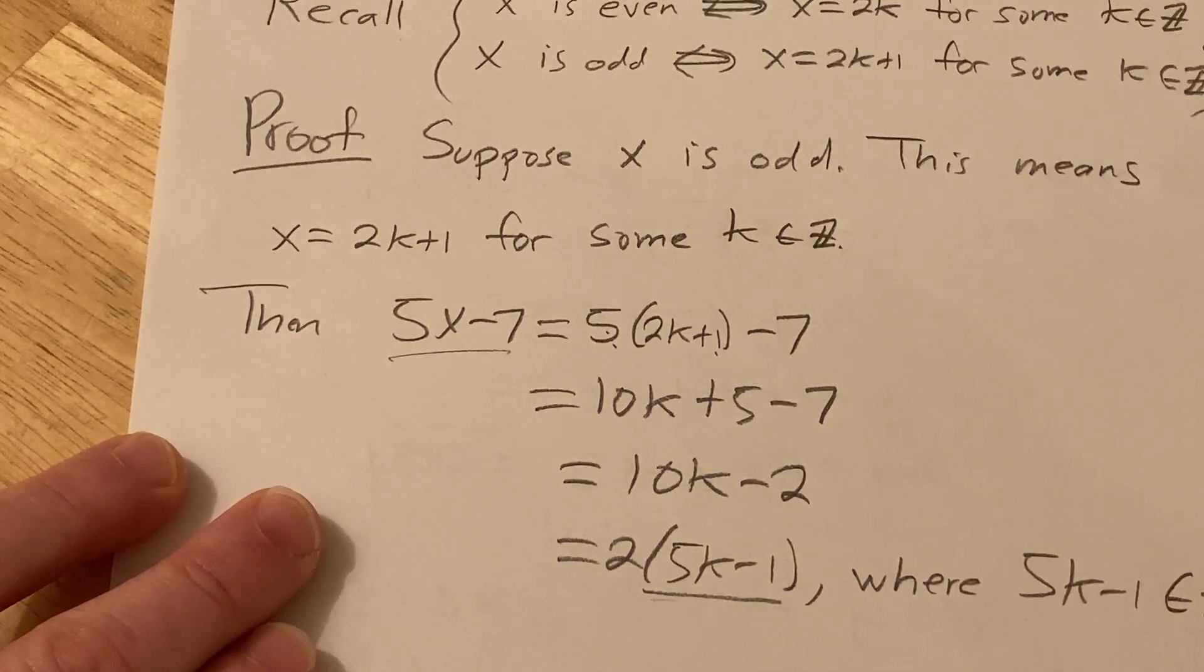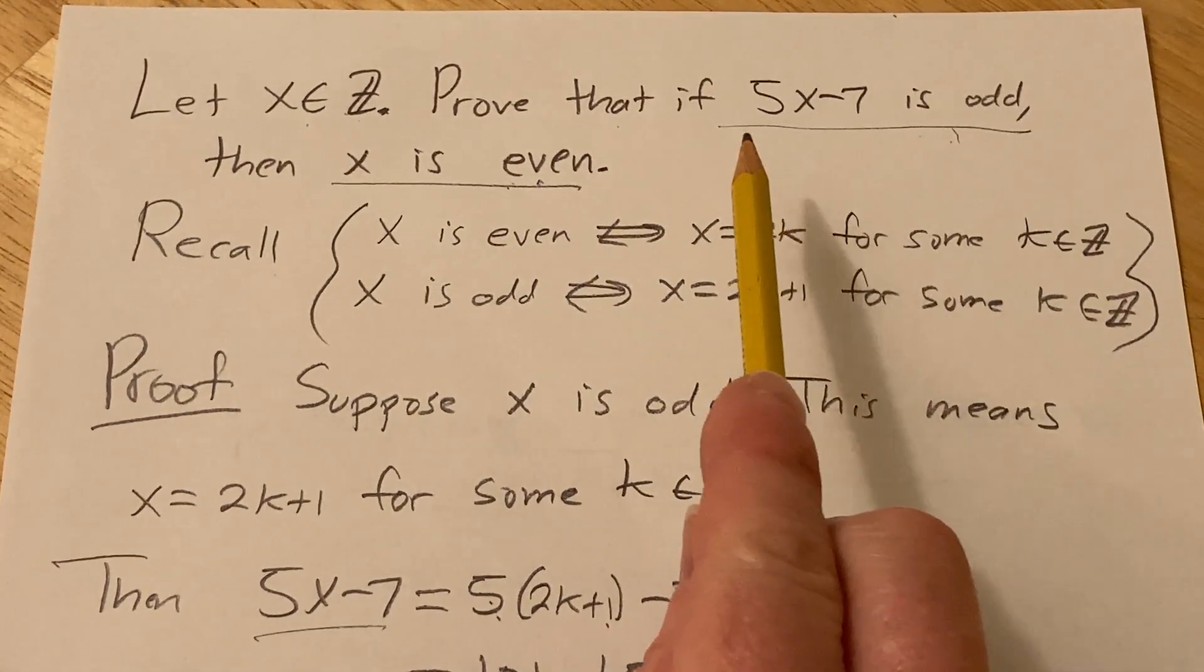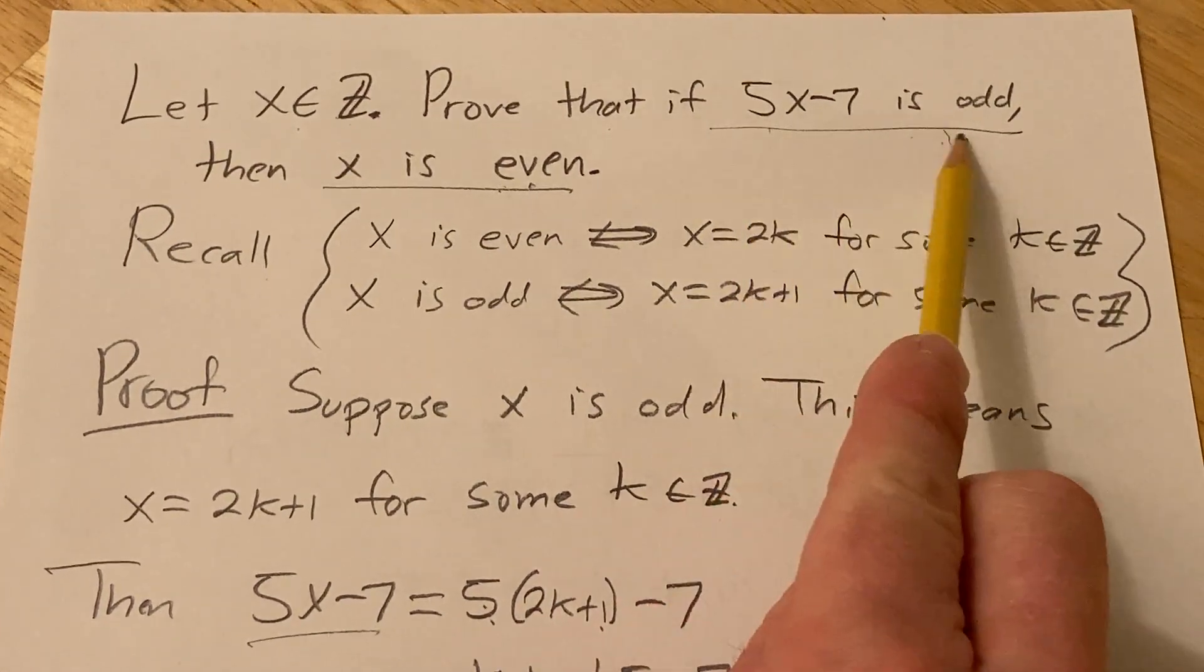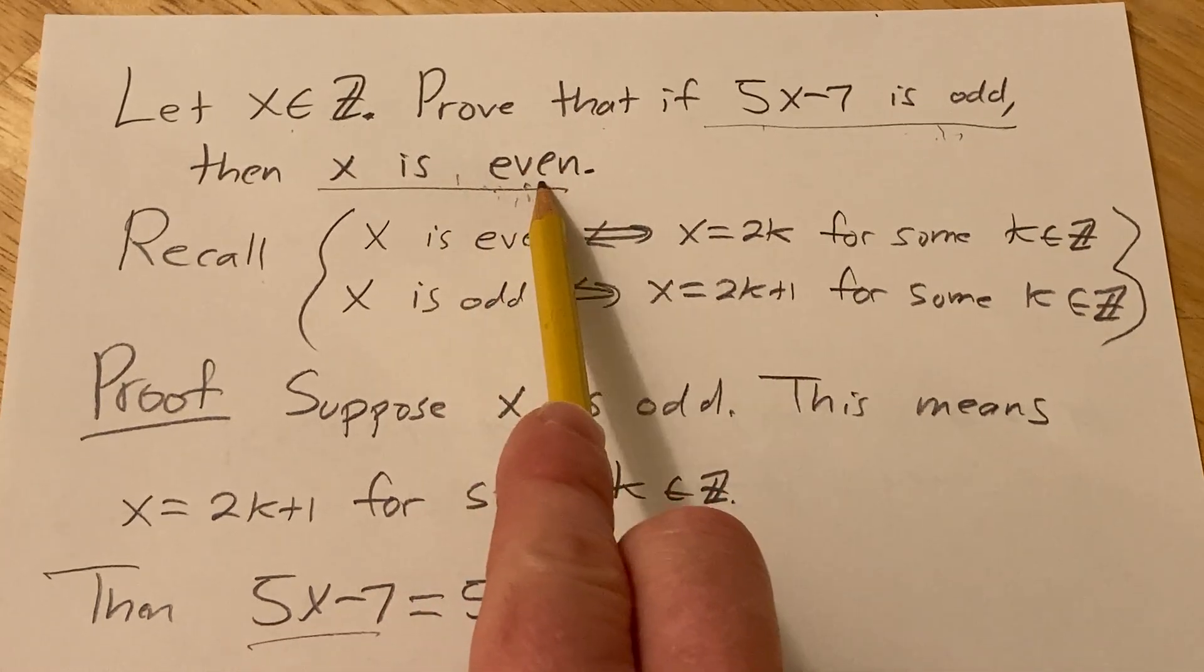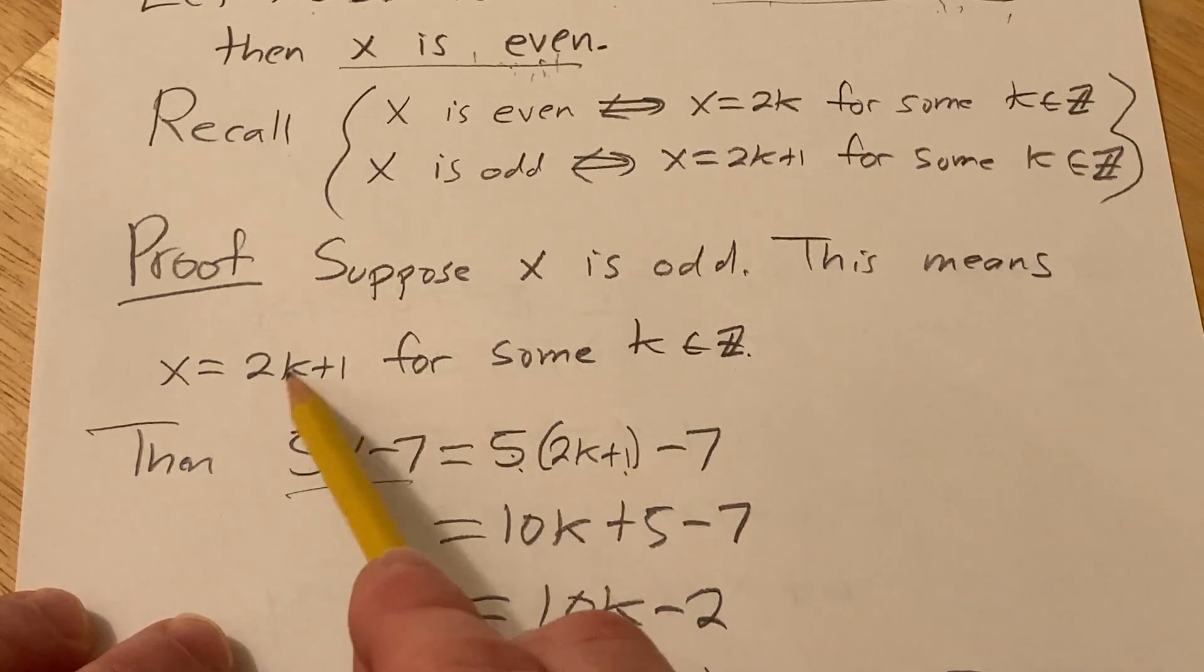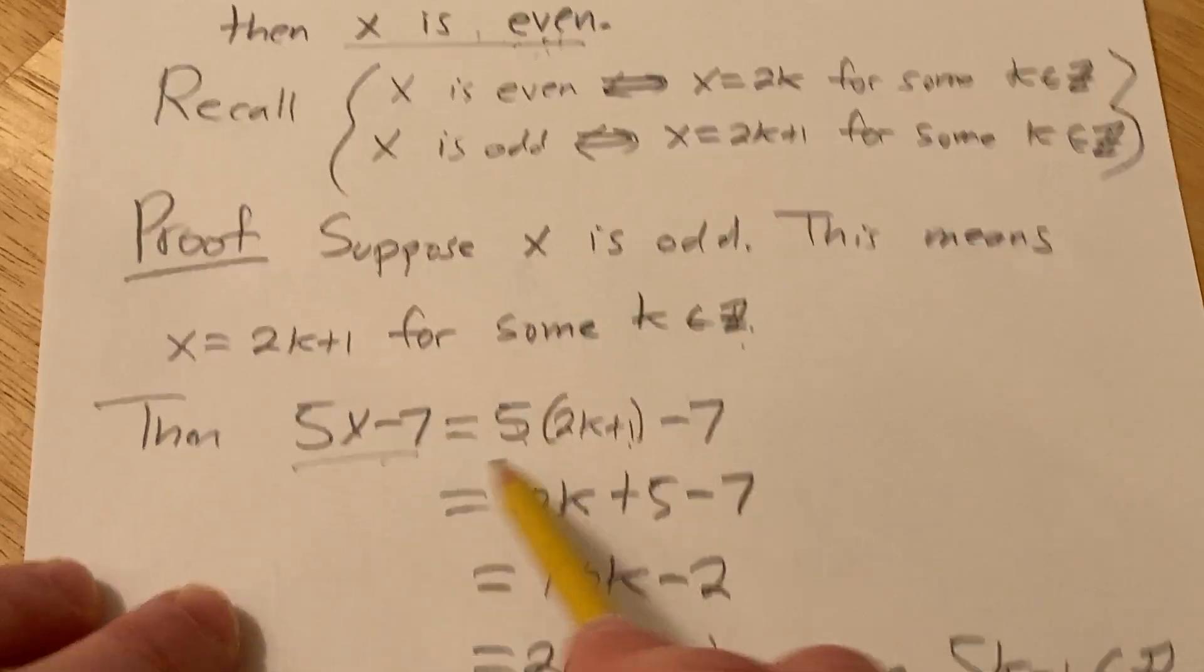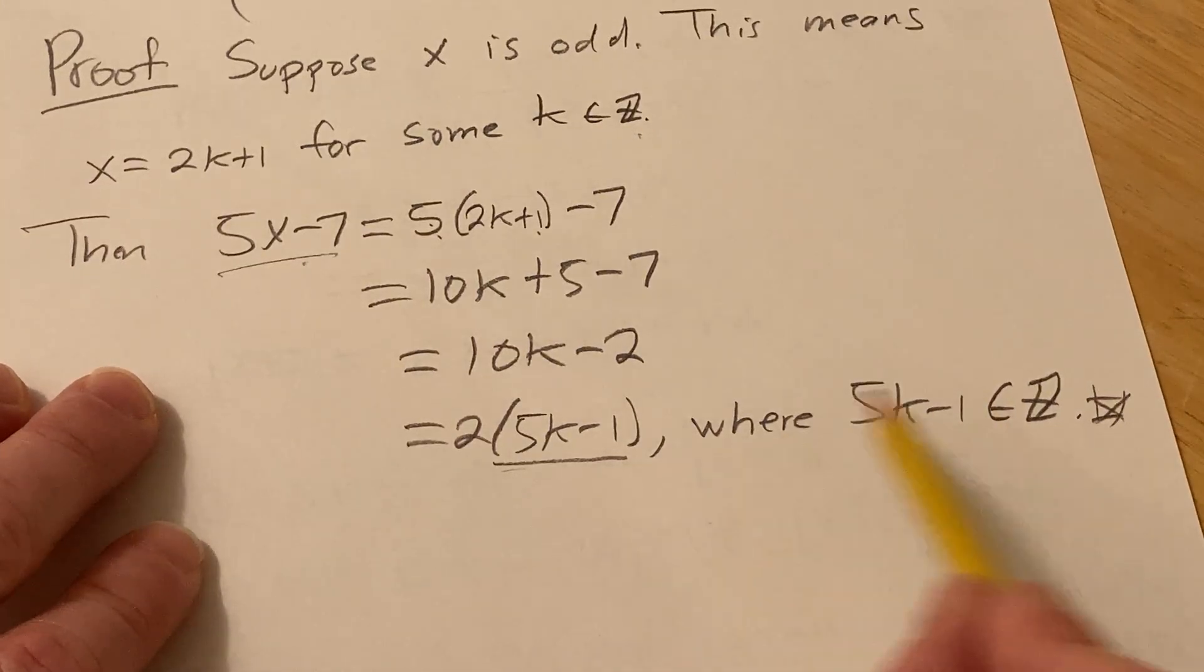Again, we gave a proof by contrapositive. Our original statement was, if this is odd, then this is even. So to prove the contrapositive, we assume this is odd, and then we show this is even. We assumed it's odd. We wrote down what it means for an integer to be odd. And then we looked at this, and we basically plugged in the x, and we showed it was a multiple of 2. That's exactly what it means to be even. And so we're done.